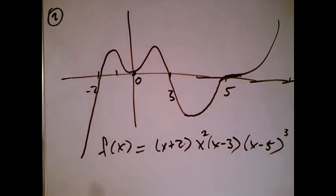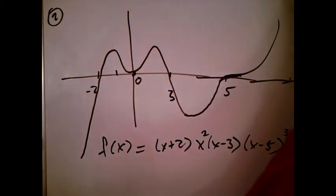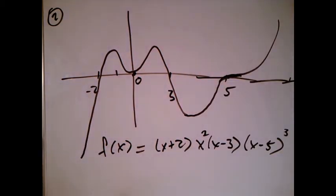We know what x to the seventh looks like. It's an odd power function. It comes down from here, it goes up like this, and then up like this. Well, that's exactly what this function does. So this is going to be my guess.